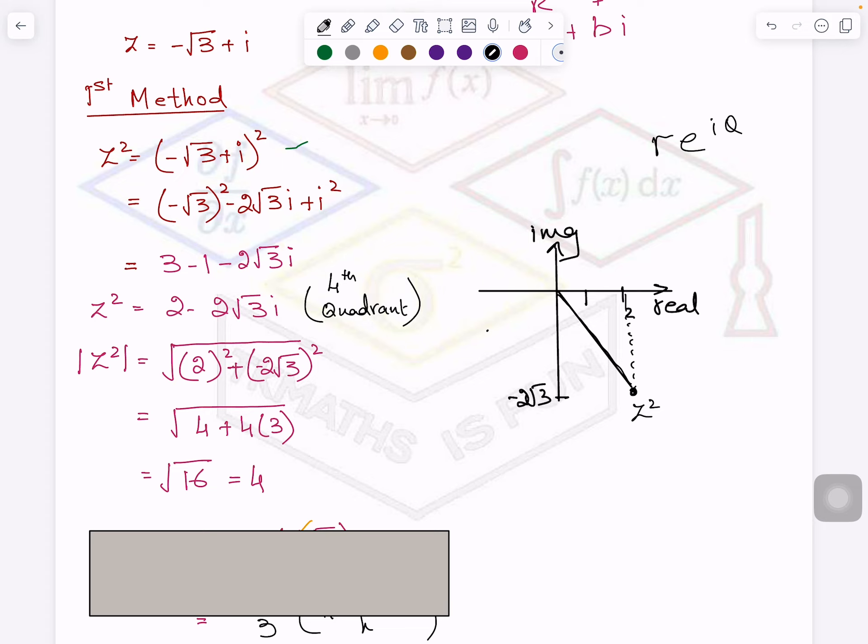So it is 4 because this part is 2. Let me change the color. This part is length 2 and this is 2√3. Sign I will not take minus, no need, I am talking about length right now. So it is 4. So this size is 4.